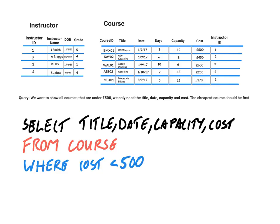You'll notice that we don't put the pound sign in — the pound sign is implied and is not actually stored. The last part is the sort order: the cheapest course should be first, which means ascending order. So we use ORDER BY cost, and since it's the cheapest first we put ascending. The ascending part is optional — if you don't specify it, it defaults to ascending order.